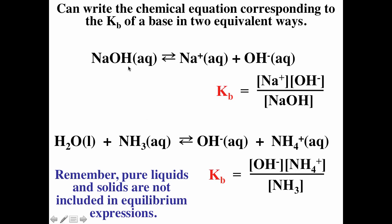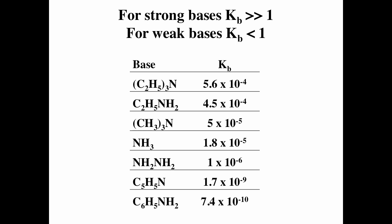We can write the Kb for a reaction as straightforwardly as sodium hydroxide going to sodium ions plus hydroxide ions, or water plus ammonia going to hydroxide plus ammonium ions. For both these reactions the equilibrium constant is going to be a Kb. Sodium hydroxide is a strong base, so it has a very large Kb. Ammonia is a weak base, so it has a small Kb. In the Kb table all the bases are weak. The bigger the Kb, the stronger the base. Ammonia is right in the middle at 1.8 × 10⁻⁵. The bigger the Ka, the stronger the acid; the bigger the Kb, the stronger the base.